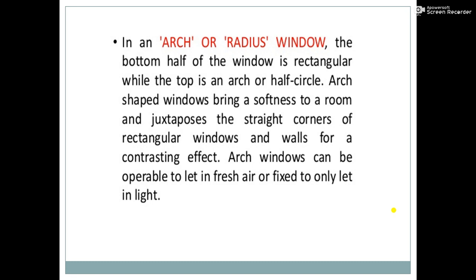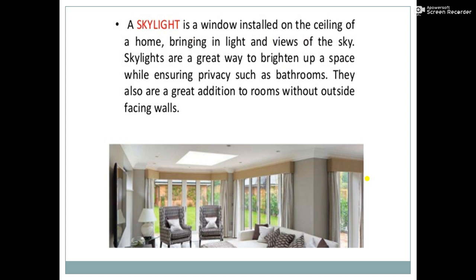The arch and radius window: the bottom half of the window is rectangular while the top is an arch or half circle. The arch-shaped windows bring a softness to the room and contrast with the straight corners of rectangular windows and walls. Arch windows can be openable to let in fresh air or fixed to only let in light.